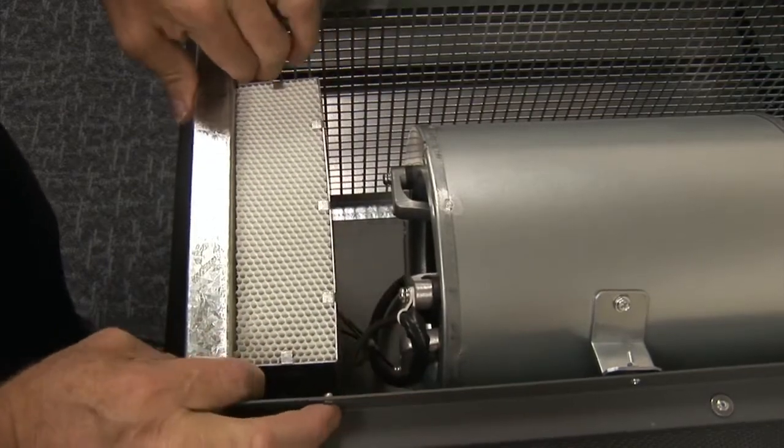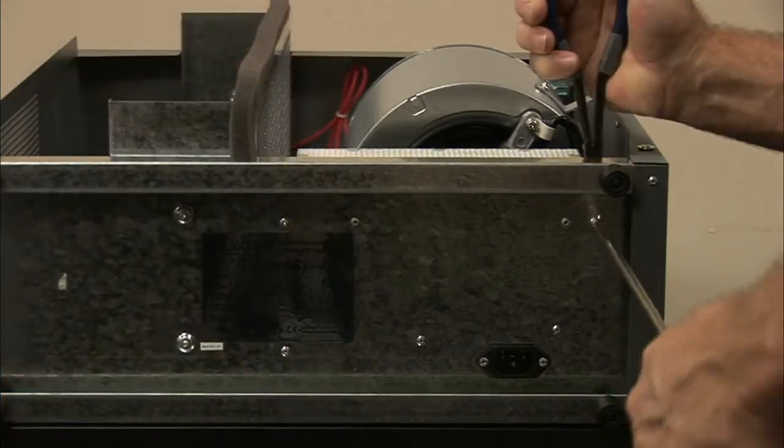Position the cover back over the bulb and ballast. Tighten both screws and secure the cover in place.